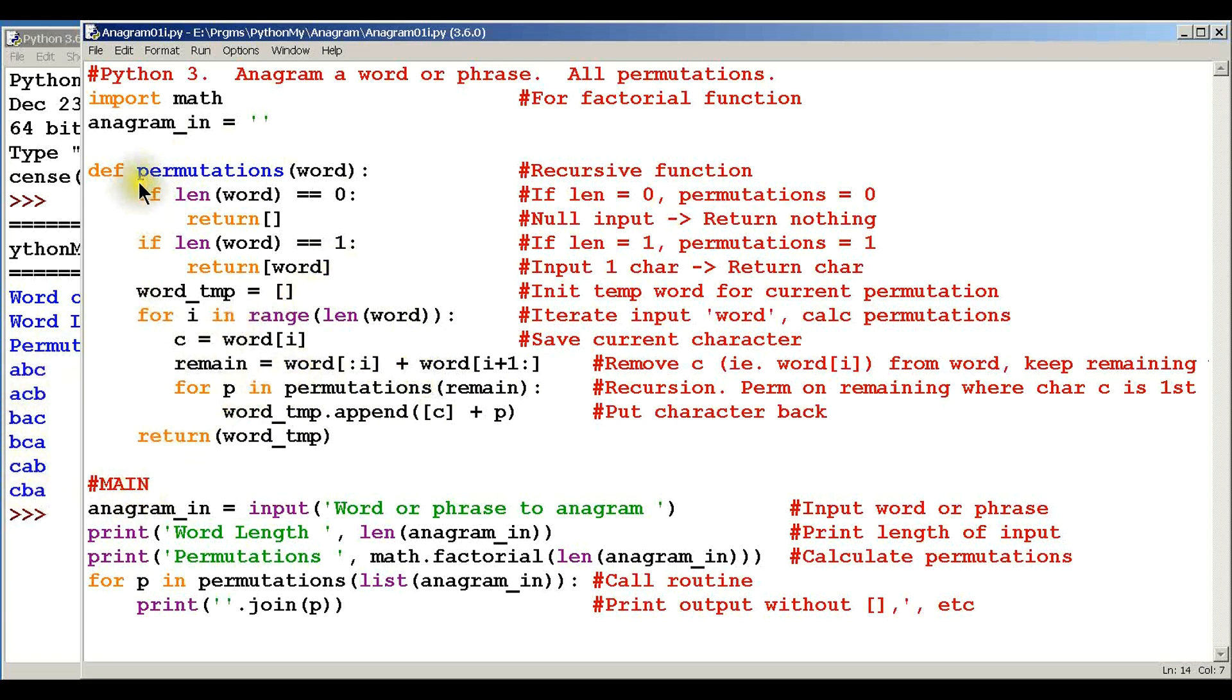What calls this function is the main routine, and this is where we get this variable that we looked at up here, anagram_in. Then we ask for the user to input a word or a phrase, and then we print the word and the word length, which is just simply the length of the word that they gave us. And then we're going to calculate the number of permutations based on a factorial of that length of word. This is where we use that math function we called in.